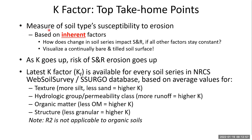The K factor is a measure of the soil type's susceptibility to erosion based on inherent factors. This isn't looking at improvements from manuring, no-till, or management over time — it's the inherent properties of the soil, how it was formed. The question RUSLE2 is really asking is: how does a change in soil series impact sheet and rill erosion if all other factors stay constant?